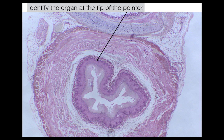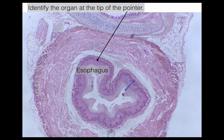You should have said esophagus. The reason we know that is we can see this stratified squamous epithelial tissue here — that's really the only slide in this unit that has stratified squamous, so you should be able to easily identify that. Another identifier is going to be the patchy muscularis mucosa, which you can see here.